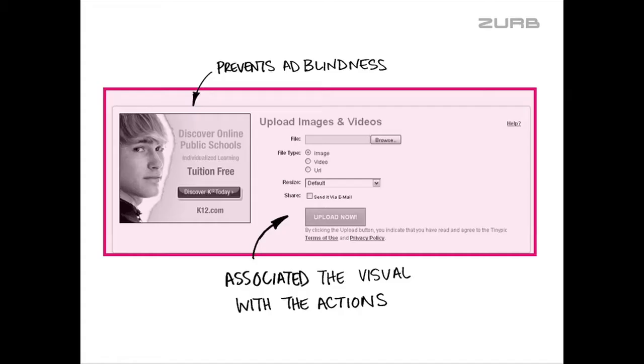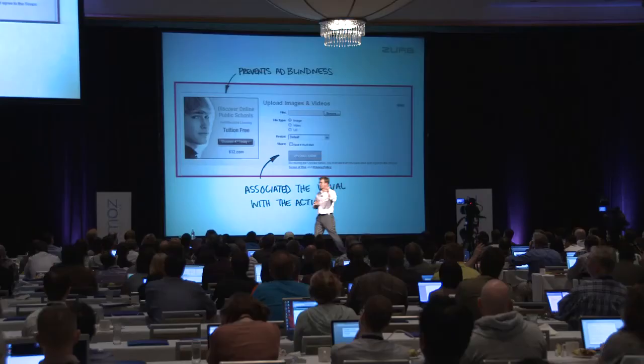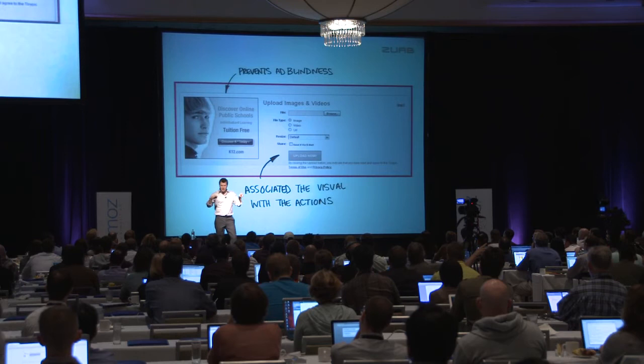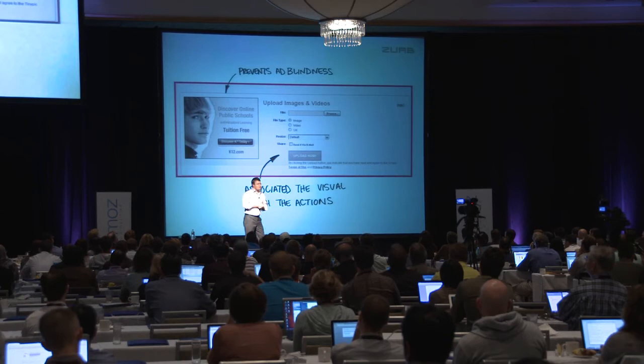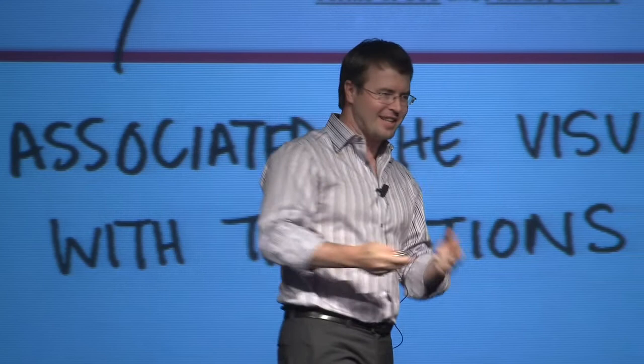What the box did was prevent ad blindness — it pulled the ad into the form and associated the visuals with the action. Most people are used to dissociating the ad from the action they're taking. In this case, since the page was fairly clean, putting a thin blue box around the edge gave more context to the ad and people clicked on it. Within a matter of days we were seeing huge performance. The real takeaway is the association of content — pulling it in prevents ad blindness.